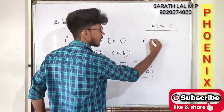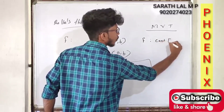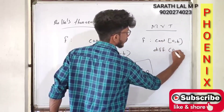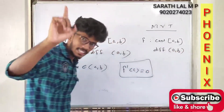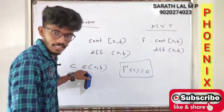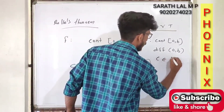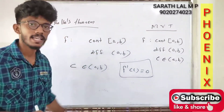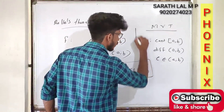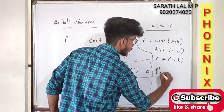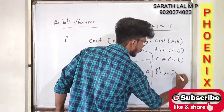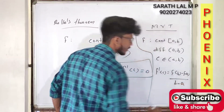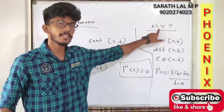Consider function f, continuous in closed interval [a, b] and differentiable in open interval (a, b). Then there exists a point c in between a and b such that f'(c) is equal to [f(b) minus f(a)] divided by [b minus a]. This is the Mean Value Theorem.